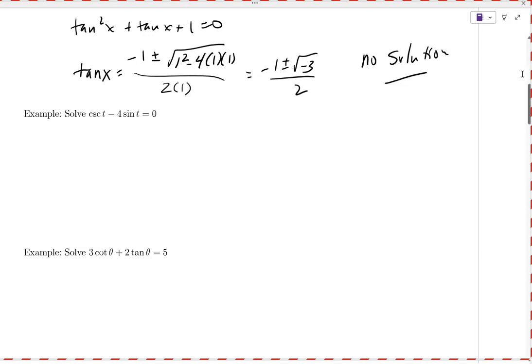This one has csct - 4sint = 0. Again, we have mismatched trig functions, so it would be nice if we could use an identity to write everything in terms of the same trig function. What identity might help here? One over sine. Yeah, one over sine. So, yeah. Replace the cosecant with 1/sinx.